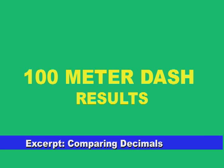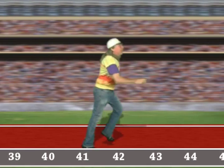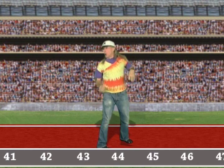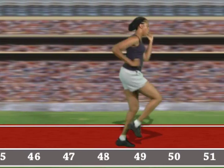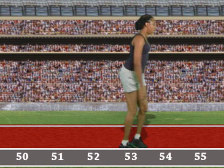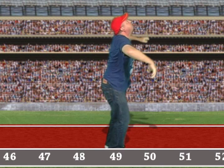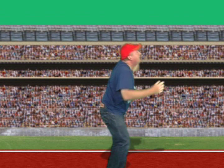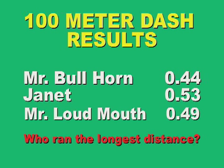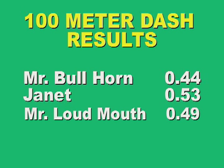It's time to check our 100 meter dash results. First, we had Mr. Bullhorn, and Bullhorn came in at 44 meters out of 100, so his score is 44 hundredths. Next, we have Janet, and Janet ran 53 meters out of 100 in ten seconds — her score is 53 hundredths. And last but not least is Mr. Loudmouth, who ran 49 meters out of 100 — his score is 49 hundredths. And who is the winner? The winner of the 100 meter dash is Janet! Congratulations!